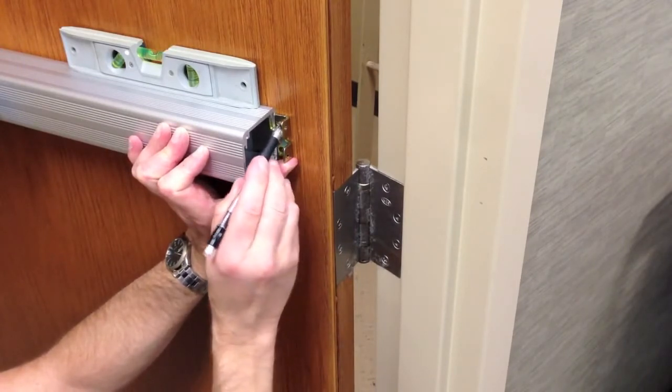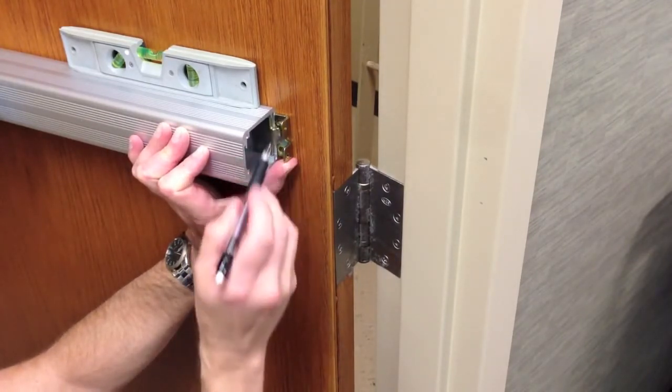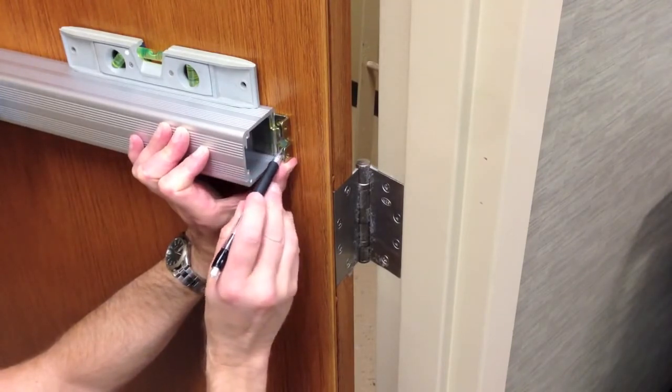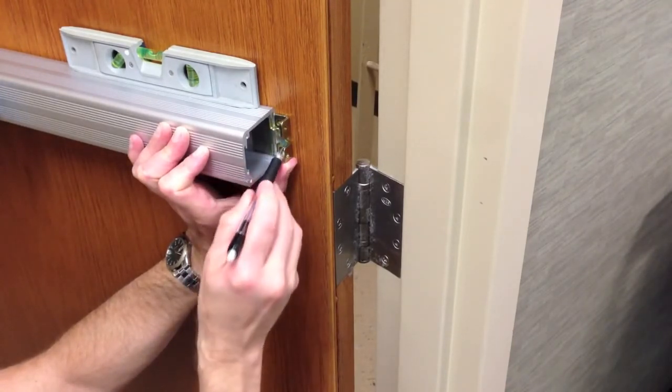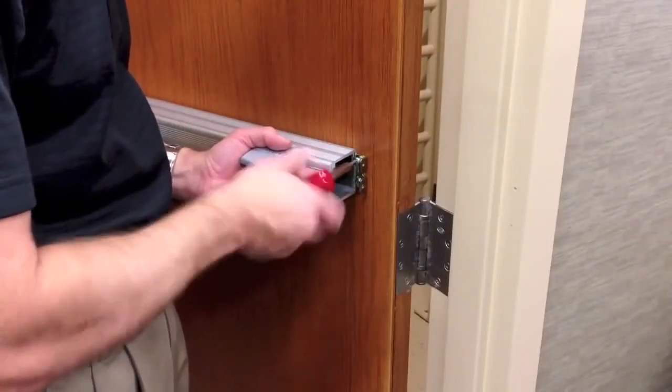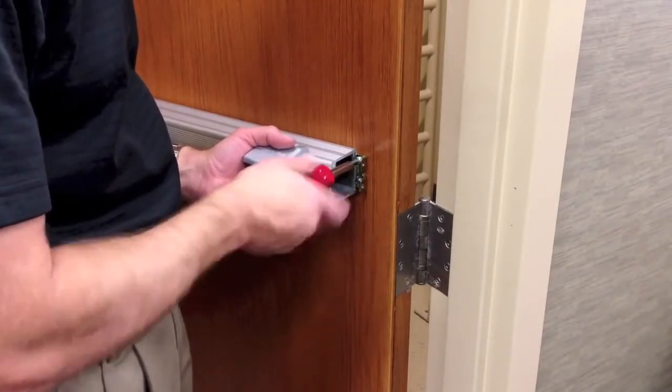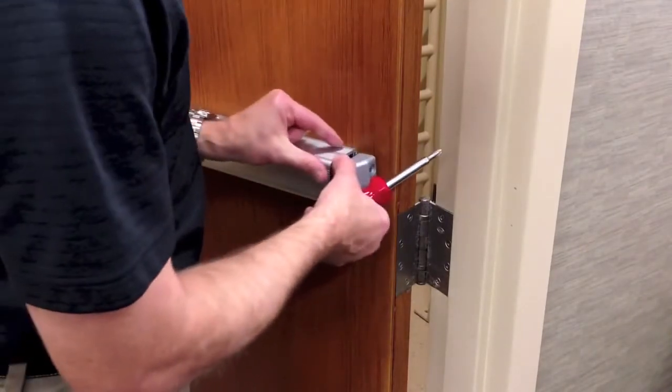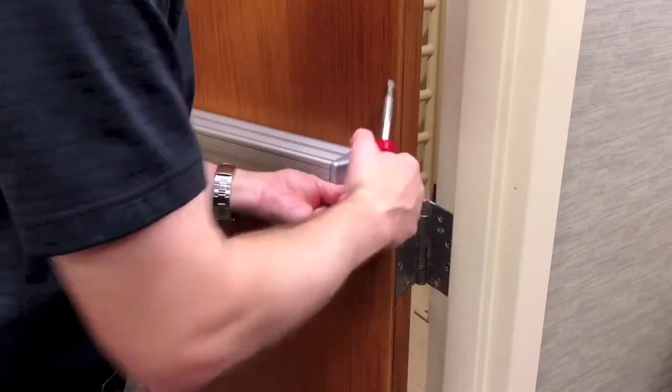Remove the exit device from the door and drill and tap the holes. The preparation chart in the instructions will guide you. Reinstall the exit device and install the end cap bracket and end cap with the provided screws. Use the screw chart to identify the proper screws.